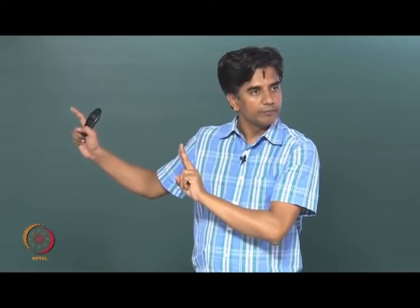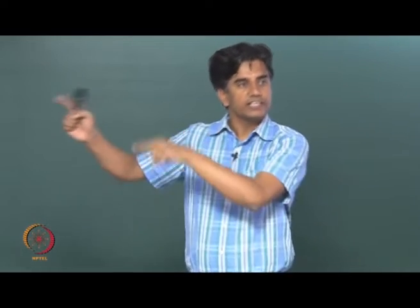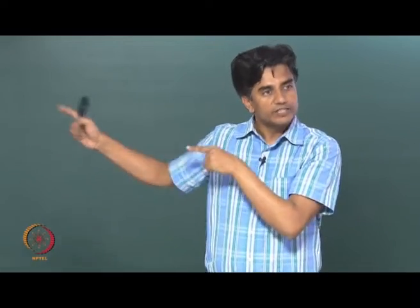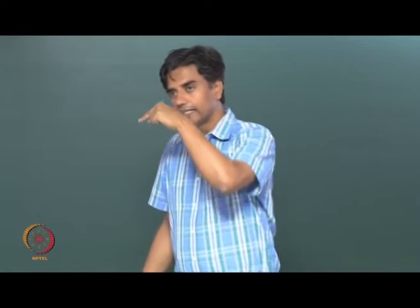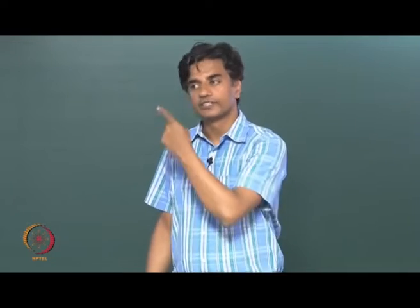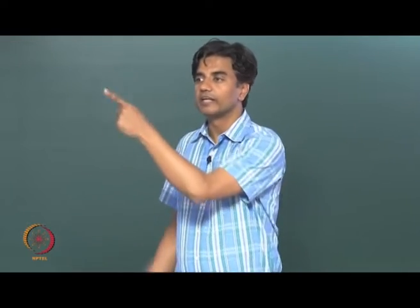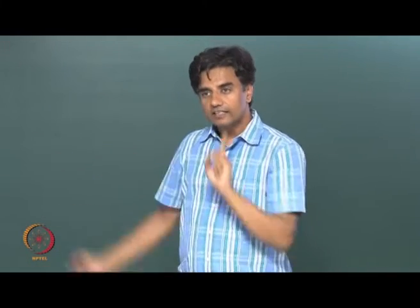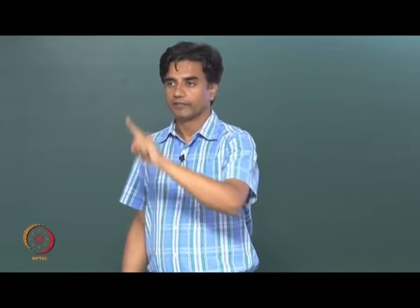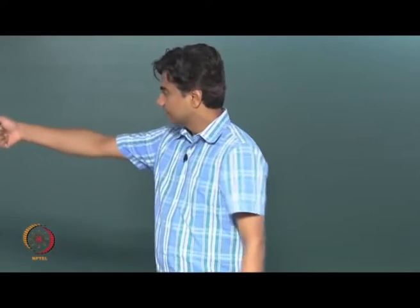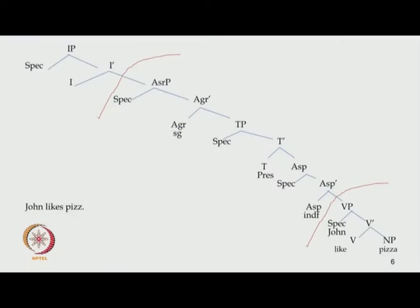The subject cannot originate in the functional domain. It must originate in the lexical domain, but it cannot stay there all the time because it would not be able to maintain agreement. That is the first motivation for movement — the first evidence that this NP cannot really stay inside VP. It has to move outside to spec AGRP.